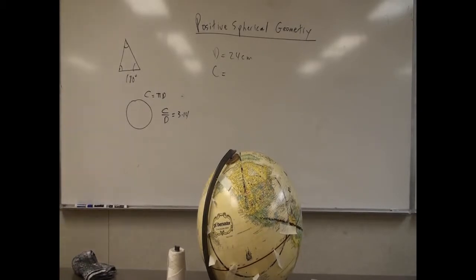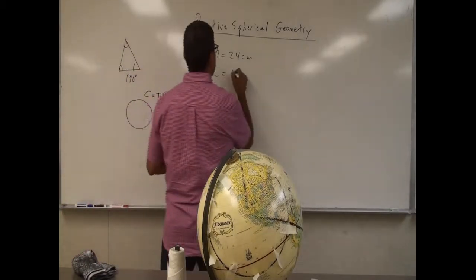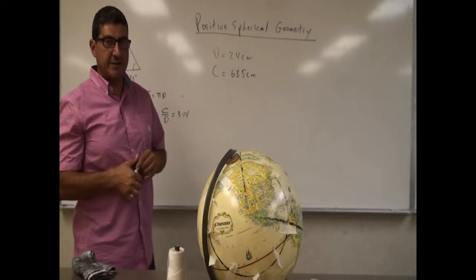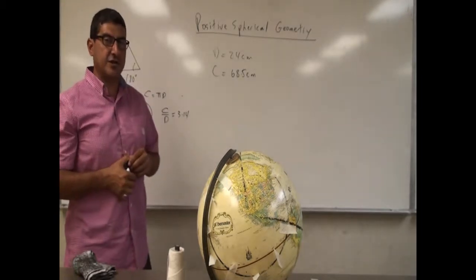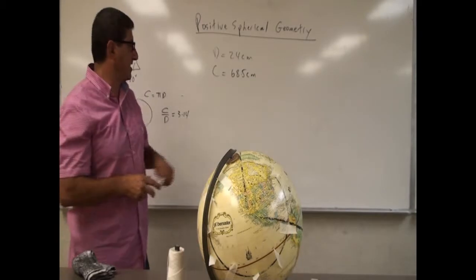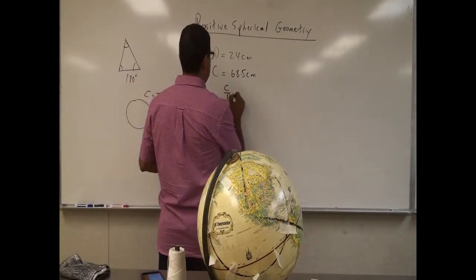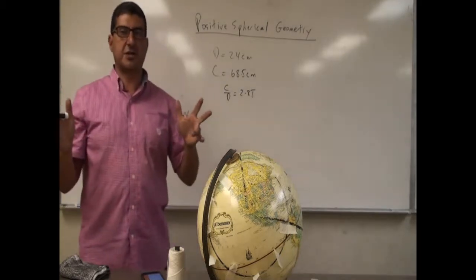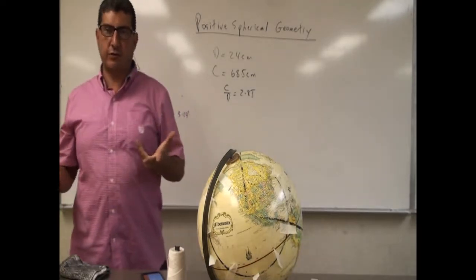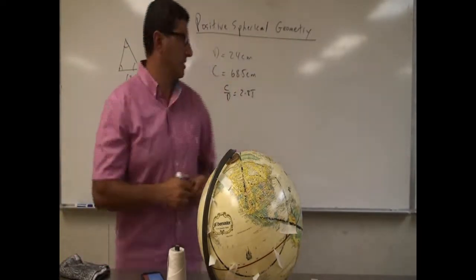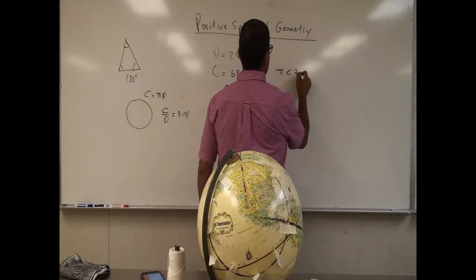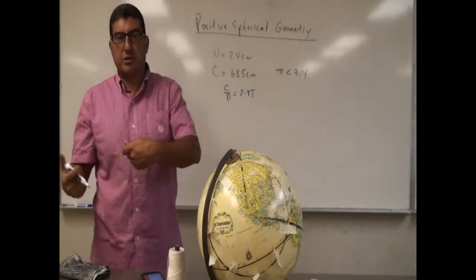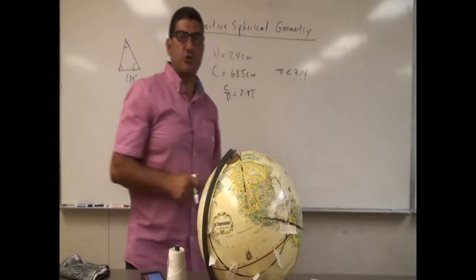The circumference is 68.5 centimeters. In school we've always learned that circumference divided by diameter equals pi — but that's only in flat geometry. Dividing 68.5 by the diameter of 24 gives about 2.85. So in a positively curved universe, the ratio of circumference to diameter is less than 3.14 — it's less than pi. This depends on how large the circle is.